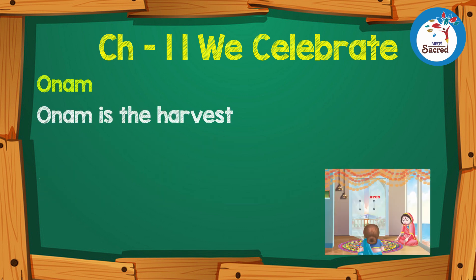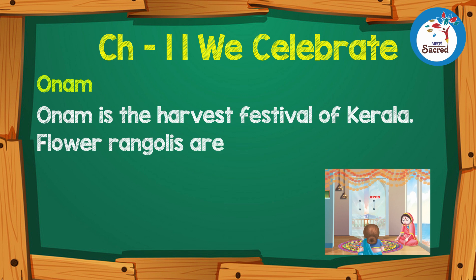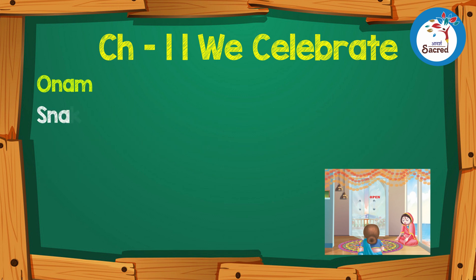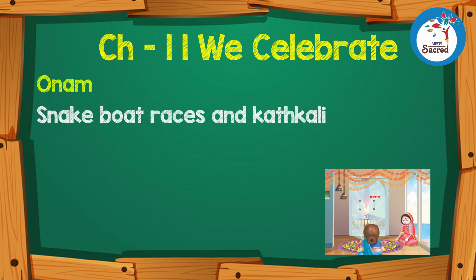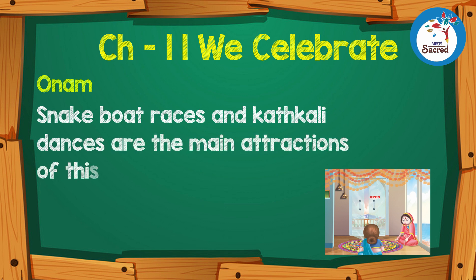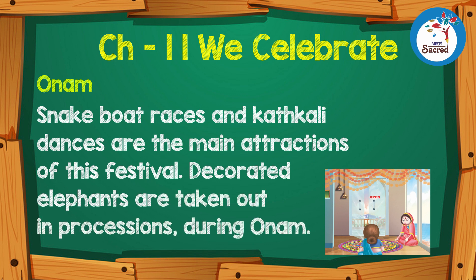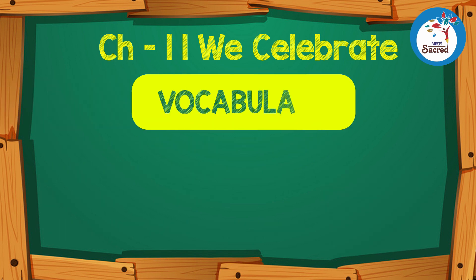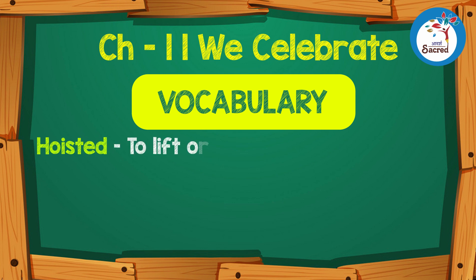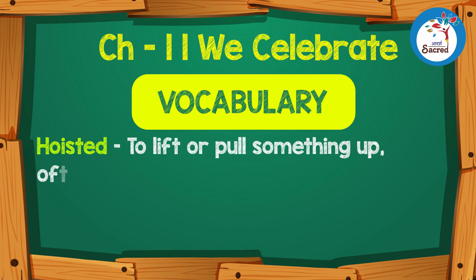Onam is the harvest festival of Kerala. Flower rangolis are made during this festival. Snake boat races and Kathakali dance are the main attractions. Decorated elephants are taken out in processions during Onam.